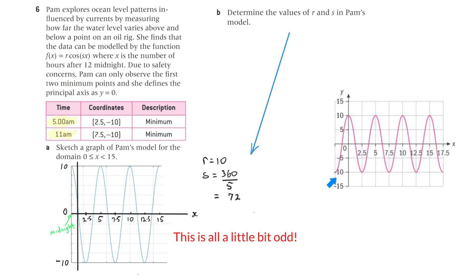Looking at the answer graph that was provided, it does clearly look like the x-axis should label 2.30 a.m. and 7.30 a.m., and then the graph would look more like that one.